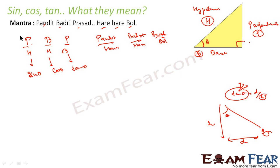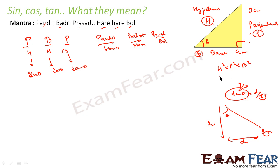So sine theta equals P by H. You draw a right triangle, identify angle theta — the side opposite the right angle is hypotenuse, the side opposite theta is perpendicular, and the side forming part of theta is the base. So sine theta = P/H, cos theta = B/H. Now using Pythagoras: H² = P² + B². For example, if P = 3 and B = 4, then H² = 9 + 16 = 25, so H = 5.